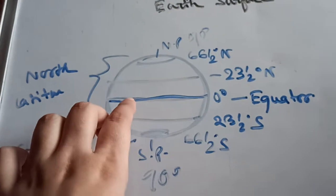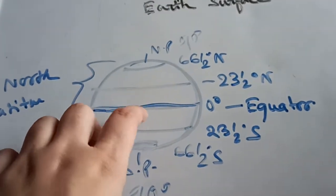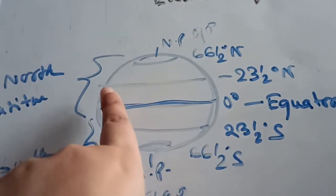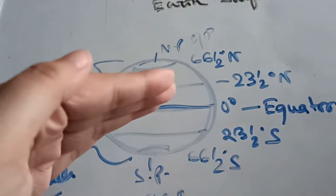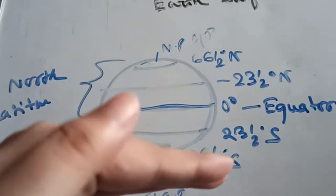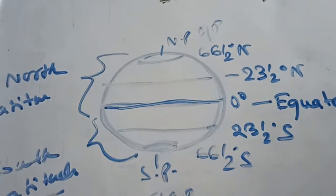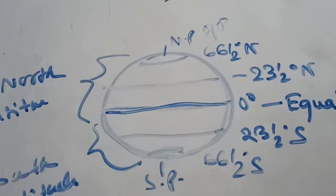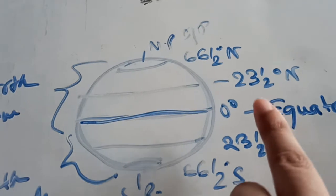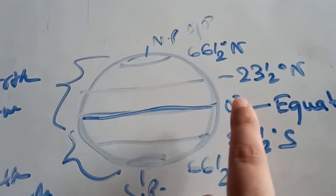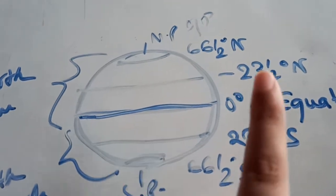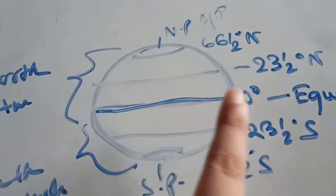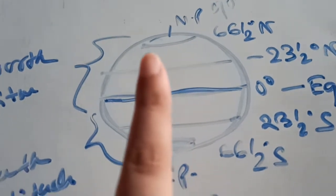The northern hemisphere is the part lying above the equator, and the portion below is called the southern hemisphere. The value of the equator is zero degrees. It is also known as the great circle.